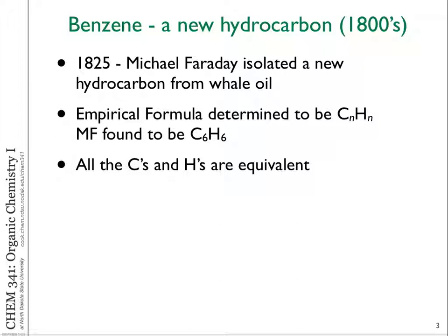Benzene has a really interesting history with a lot of folklore around how people thought about its structure. The original isolation of benzene — just the C6H6 molecule — was from distilling whale oil, which was the energy source before petroleum. Without a good idea about chemical structure and bonding back in the 19th century, people didn't really know what the structure was. Eventually it was determined that benzene had an empirical formula of CH — one carbon for every hydrogen — and that the molecular formula was C6H6.